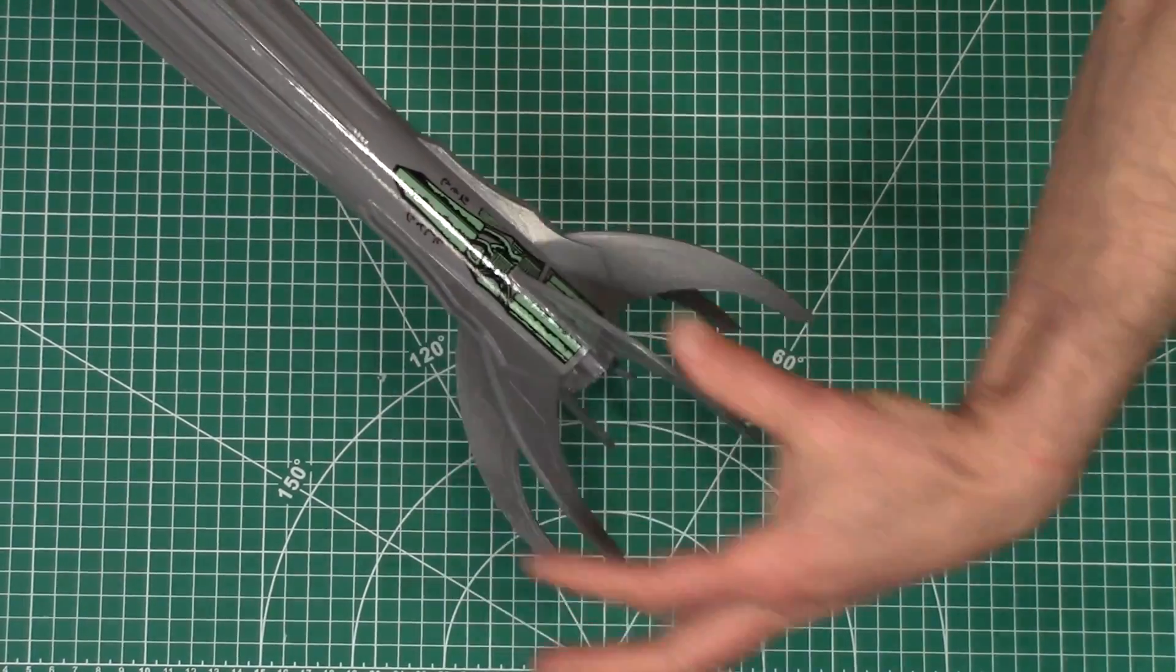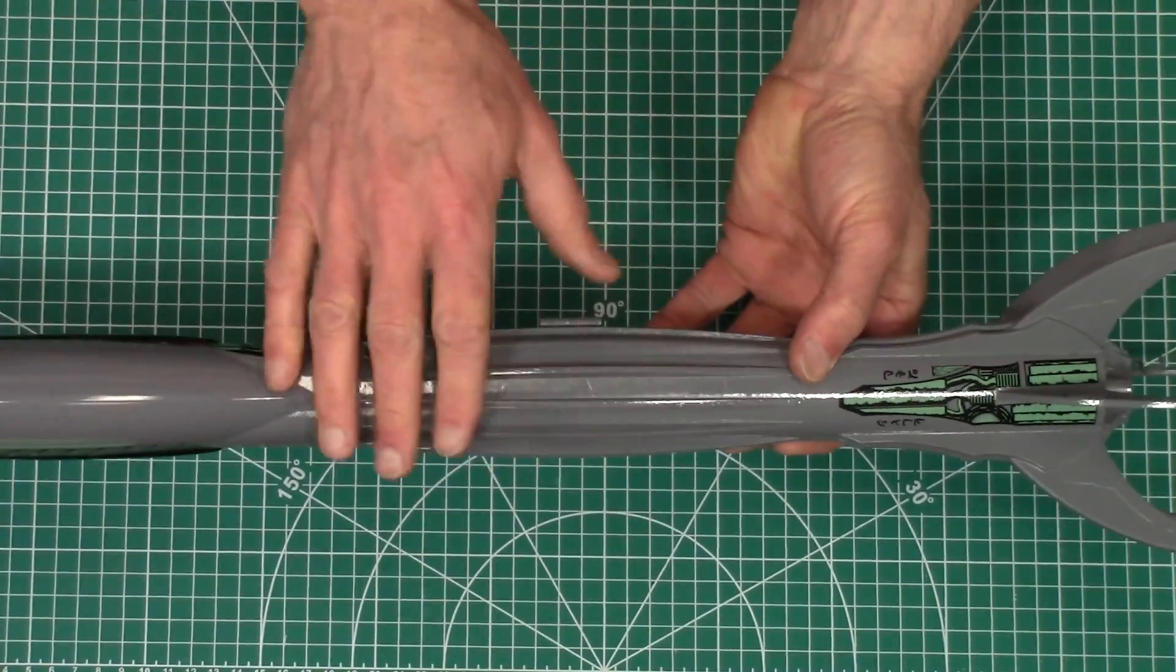As you can see, it's got these really nice claw-like fins. It's got these nice strakes right here.